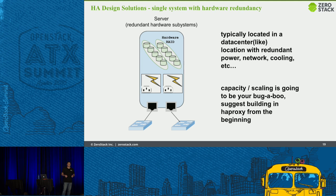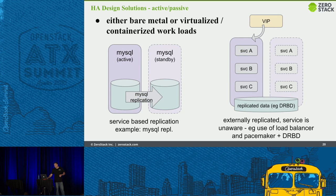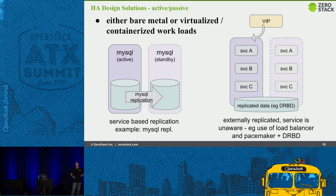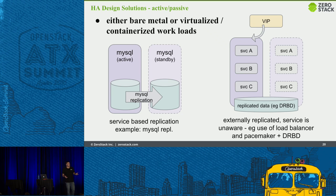Hardware RAID is critical in a standalone case. For a traditional active-passive service architecture, some services have active-passive baked in already — MySQL and RabbitMQ are examples. MySQL can actively replicate data to a standby system that can take over the workload, and you can have N number of standby services with read-write and read-read-read solutions.